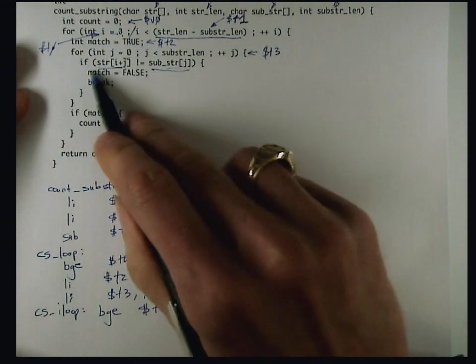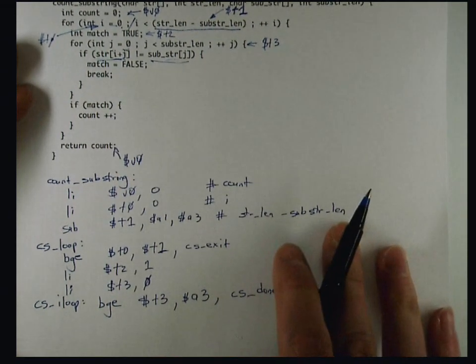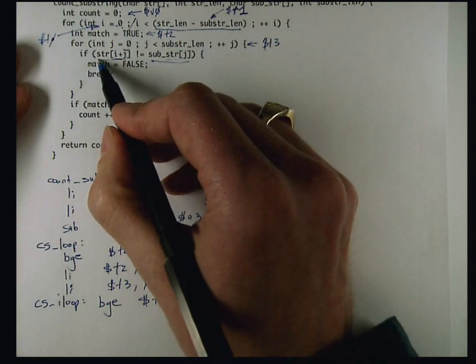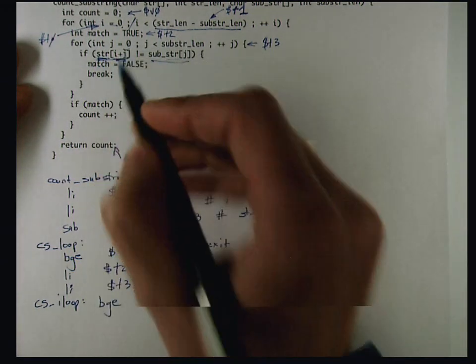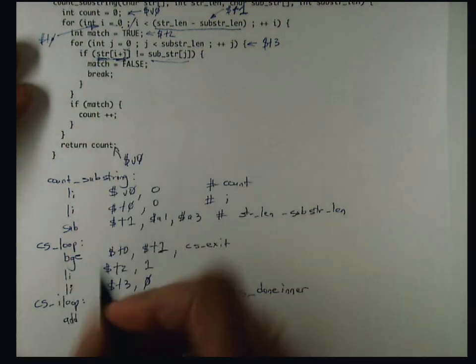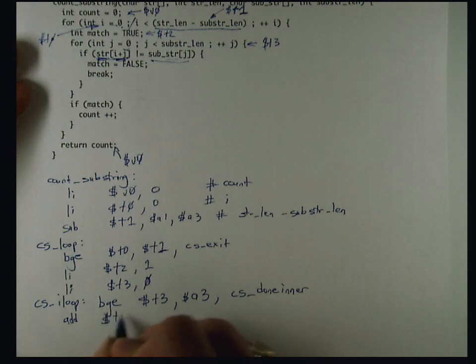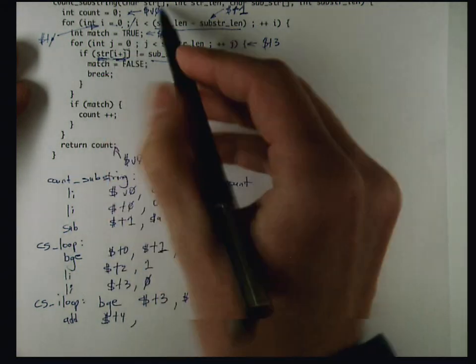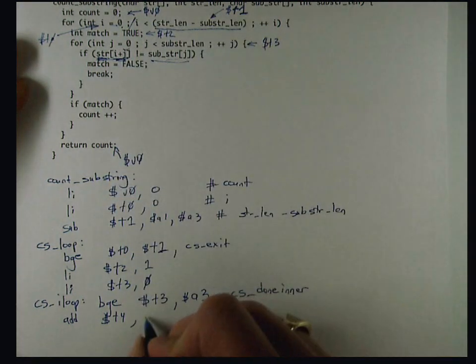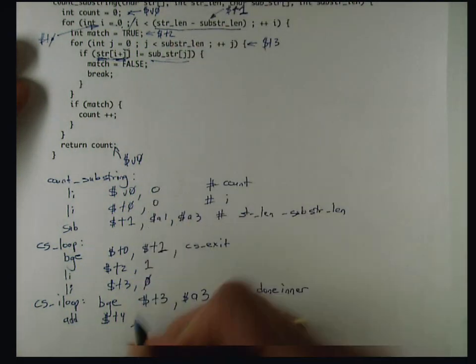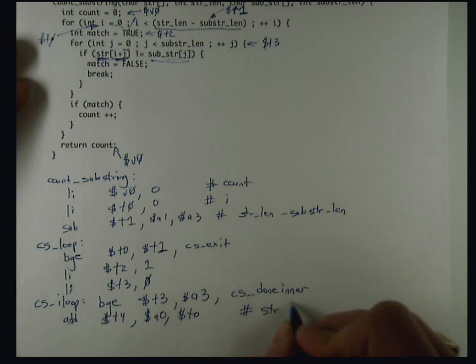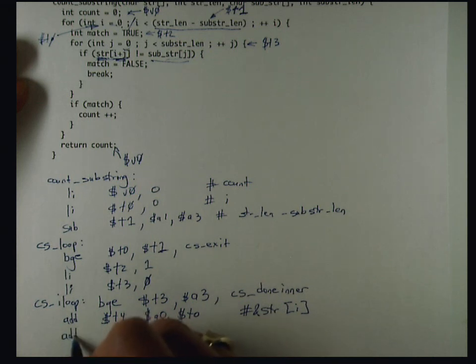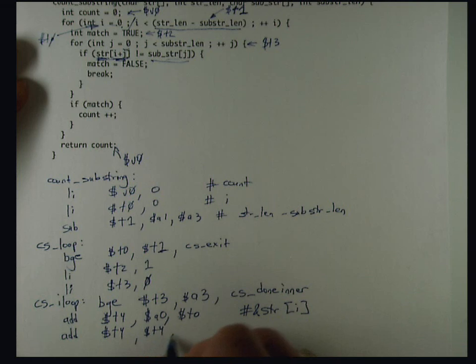So then I translate the body of the loop, and I have to do two loads to load these characters. Because these are character strings, all I have to do is add the base pointer to the offset. I don't have to scale the offset. To load this one, I'm going to allocate a temporary T4, and I'm going to add the base address to I first, and then another step, I'm going to add J. The base address is A0, and I is in T0. So far, I have the address of str I, and then if I add J onto that, so I'm adding T4 to where J is, J is in T3.